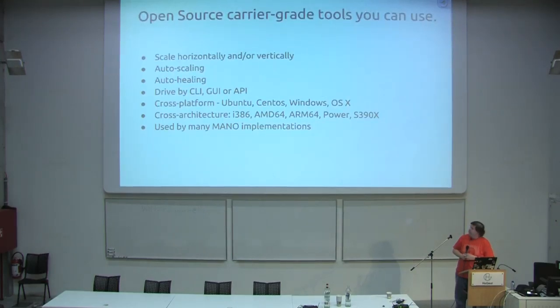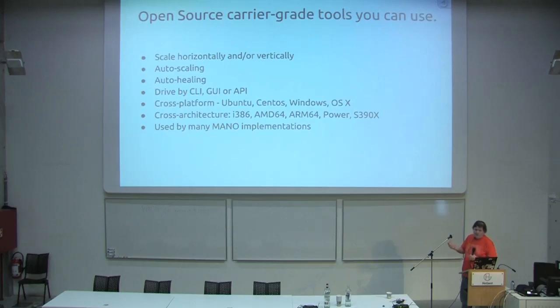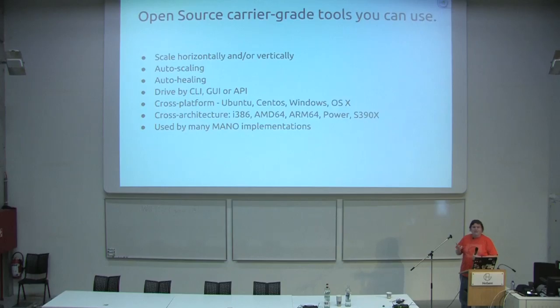Just a little summary. We've learned a lot here about configuration management in a short amount of time, and there's a lot to it — a lot of acronyms and confusion between what they mean. But here are the basics: we can scale horizontally or vertically, auto-scale and auto-heal, which are very critical for carrier-grade performance. You can drive this by command line, GUI, or two different APIs. It's cross-platform — Ubuntu, CentOS, Windows, OSX — and cross-architecture. There are at least four MANO implementations I know of that are using this underneath the covers to drive configuration management.